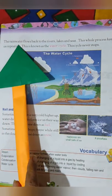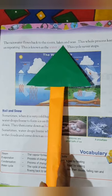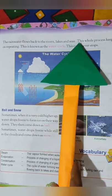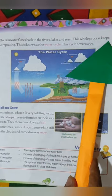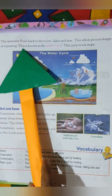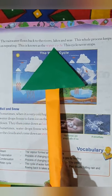The rain water flows back to the rivers, lakes and seas. This whole process keeps on repeating. This is known as the water cycle. This cycle never stops.